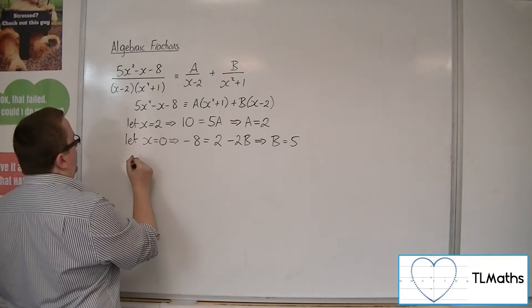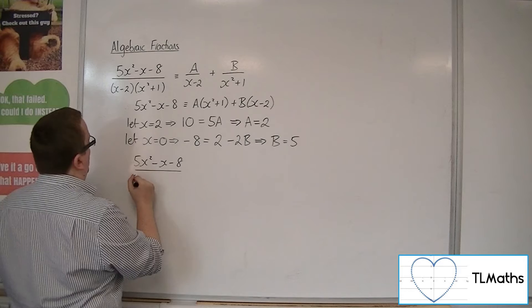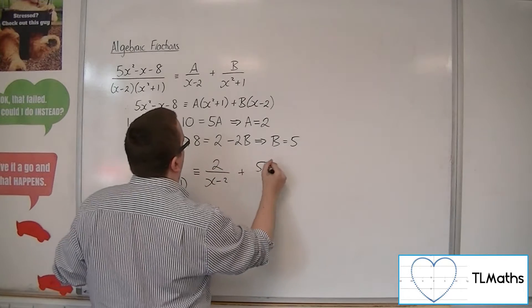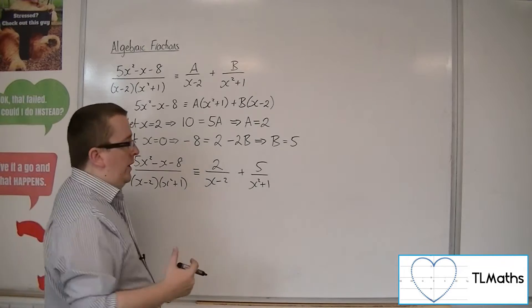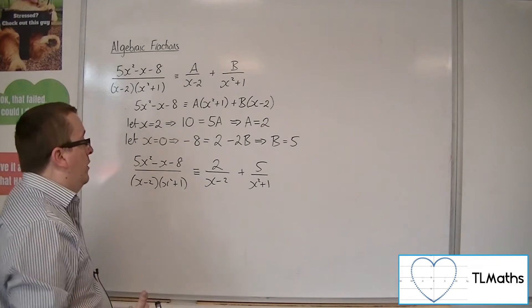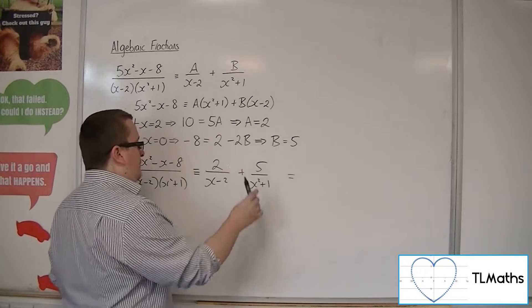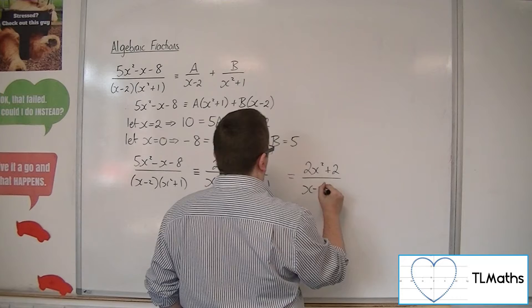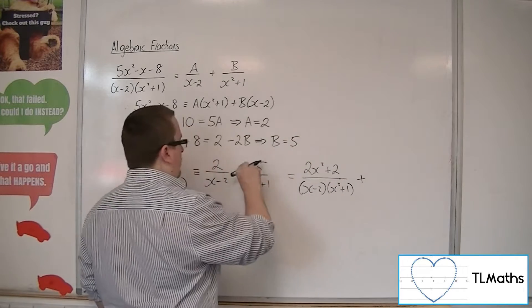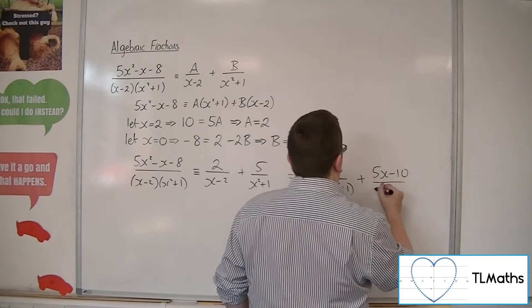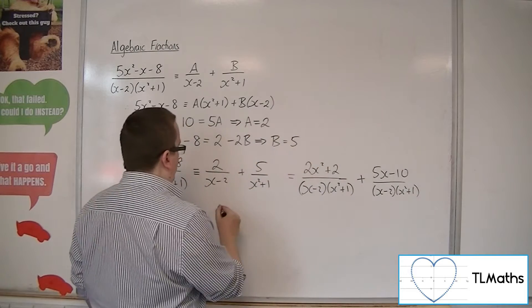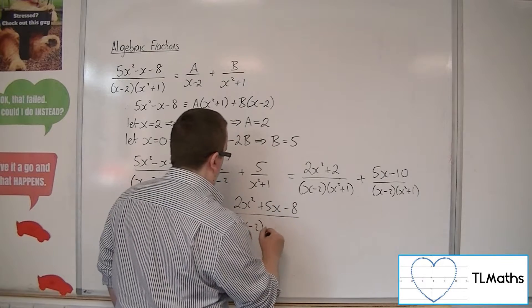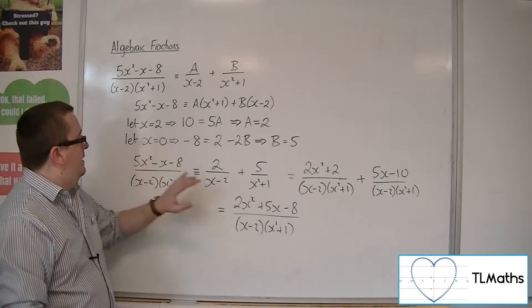So B is 5. So what I'm saying is that 5x squared minus x minus 8 over x minus 2 x squared plus 1 should be written as 2 over x minus 2 plus 5 over x squared plus 1. So now it's our job to check whether this is correct when I add these two fractions together. So I'm going to use cross-multiplication, so I'm going to have 2 lots of the x squared plus 1, so 2x squared plus 2 over x minus 2 x squared plus 1.